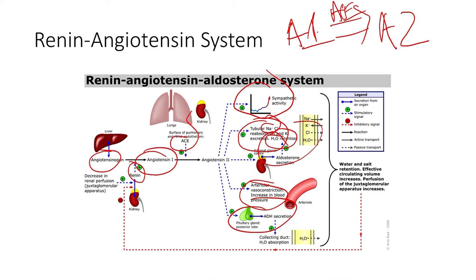Low perfusion makes sense if you think about an example: say we have a saber-toothed tiger that rips our arm off. We lose a bunch of blood volume, which means low perfusion through the kidneys. So we want to preserve the volume we have. The kidneys will release renin, which will bind to angiotensinogen and convert it to angiotensin 1. That interacts within the lungs and converts from angiotensin 1 to angiotensin 2, which leads to effects that help us preserve pressure and keep organ perfusion constant. That is the RAS system in a nutshell.